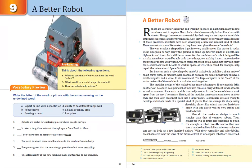Researchers are also trying to develop snakebots made of a special kind of plastic that can change its shape using electricity, almost like animal muscles. Snakebots made with this plastic will be very strong and hard to break.